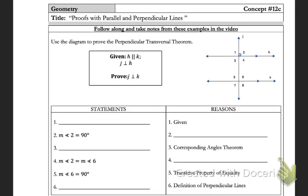Section 12c covers several more examples of proofs and how we work through them, just to show our thought process and help you get into the thought process. For these fill-in-the-blank ones, look at the clues that you're given.